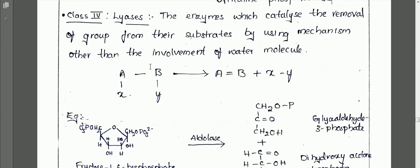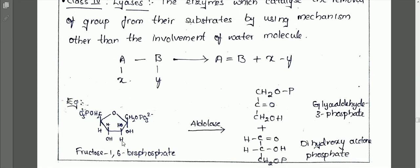For example, fructose-1,6-bisphosphate consists of two phosphate groups. These two phosphate groups are removed in the form of glyceraldehyde-3-phosphate and dihydroxyacetone phosphate. The enzyme acting on this substrate is aldolase, which belongs to the class lyases.